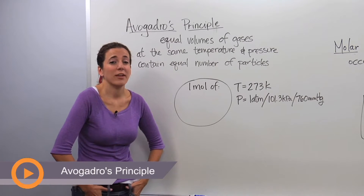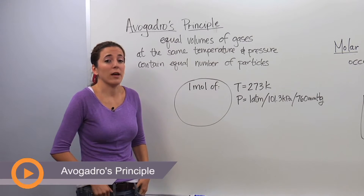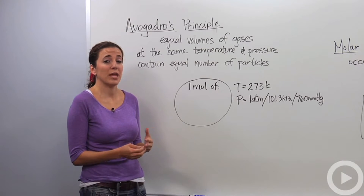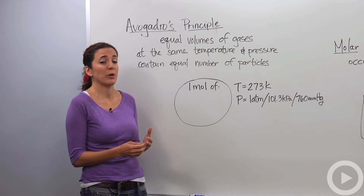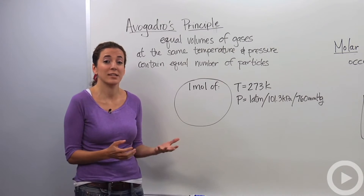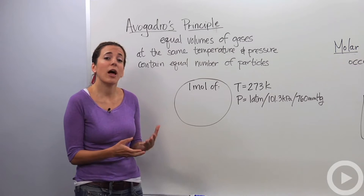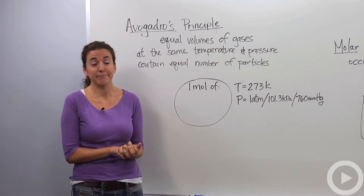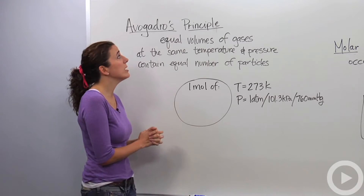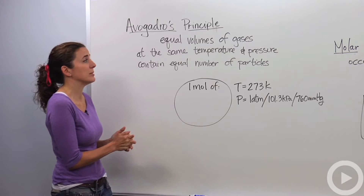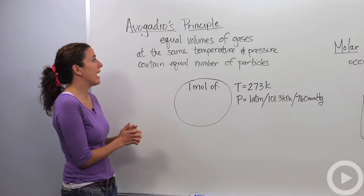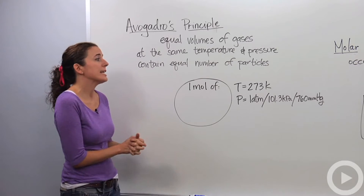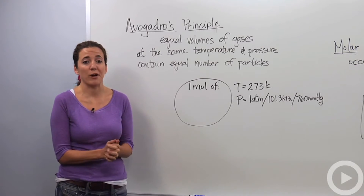Our friend Avogadro did several experiments when dealing with the concept of the mole. He's the one who came up with the number 6.02 times 10 to the 23rd. He also came up with several other things, one dealing with gas particles. And here's Avogadro's principle: it states that equal volumes of gas at the same temperature and pressure contain equal number of particles.